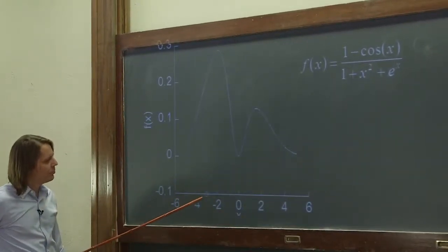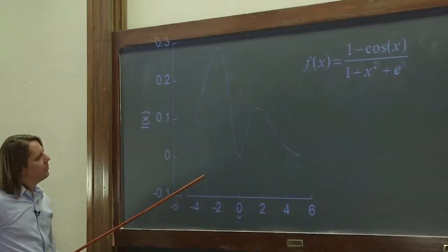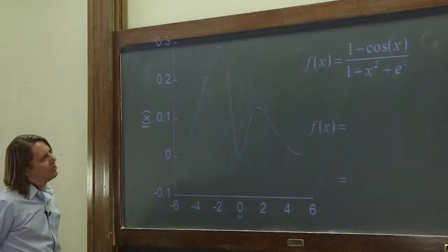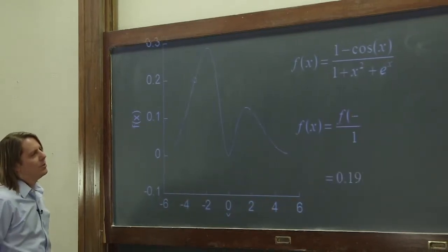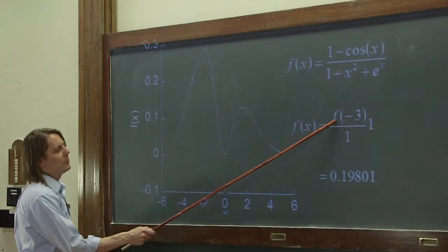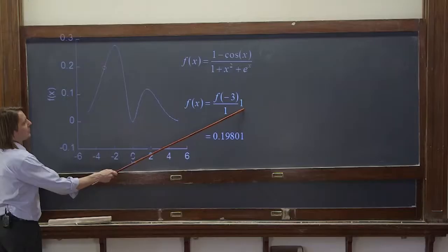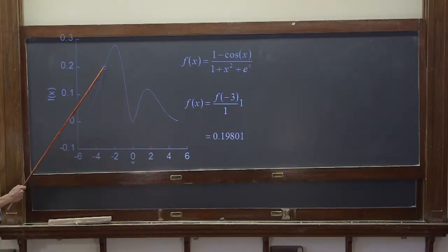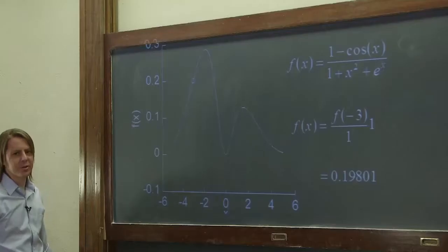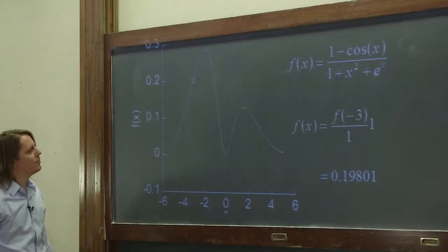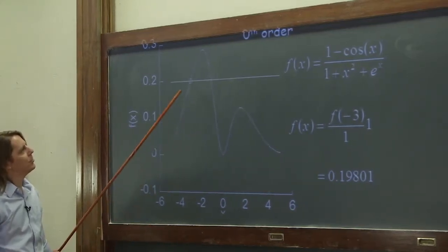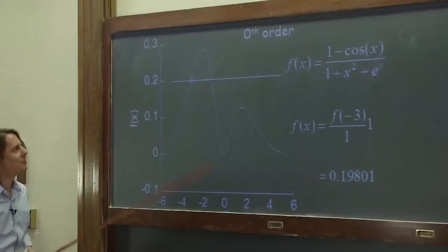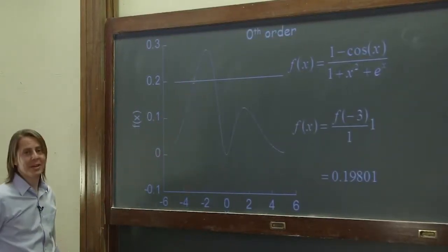Let's look first at x equals minus 3. The first term is the function evaluated at minus 3 over 0 factorial, times x minus minus 3 to the 0, which equals 1 — so it's really just the evaluation of the function at minus 3, which comes in at just below 0.2. Sure enough, there it is. The zeroth order term is always just a constant: 0.19. The approximation at this point isn't very good — it's just a constant, really good right at that point but not good anywhere else.